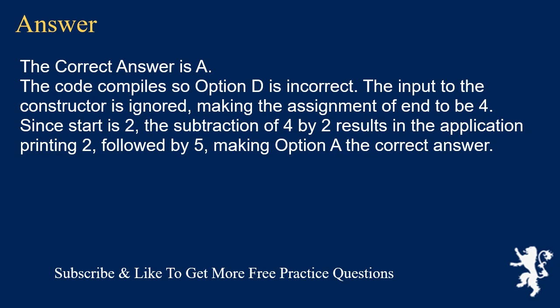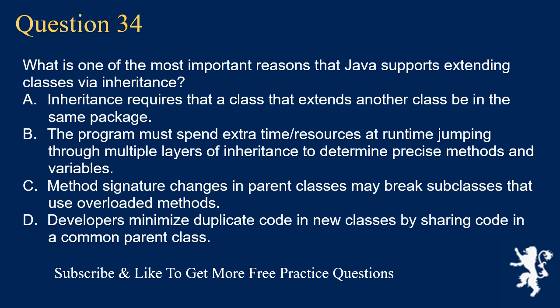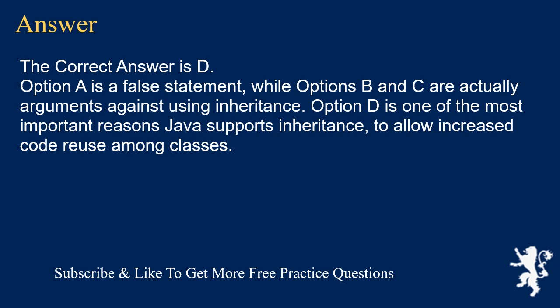Question 34: What is one of the most important reasons that Java supports extending classes via inheritance? A) Inheritance requires that a class extending another class be in the same package. B) The program must spend extra time at runtime jumping through multiple layers of inheritance. C) Method signature changes in parent classes may break subclasses that use overloaded methods. D) Developers minimize duplicate code in new classes by sharing code in a common parent class. The correct answer is D. Option A is a false statement, while options B and C are actually arguments against using inheritance. Option D is one of the most important reasons Java supports inheritance — to allow increased code reuse among classes.